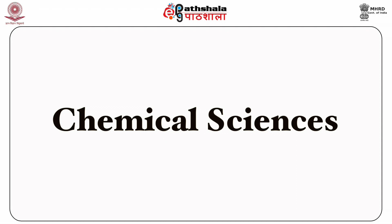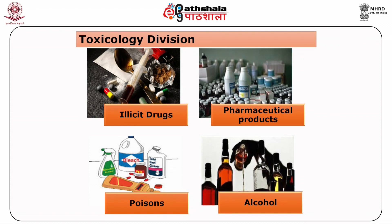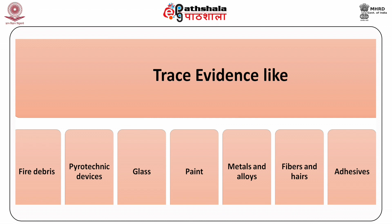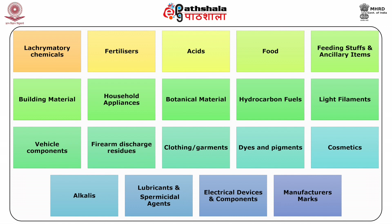In chemical sciences, controlled substances — for example, controlled pharmaceutical and illicit drugs and related chemicals or paraphernalia — are brought in. In the toxicology division, evidences sent for examination are pharmaceutical products, poisons, alcohol and human viscera. Whereas in criminalistics, trace evidences include fire debris, pyrotechnic devices, glass, paint, metals and alloys, fibres and hairs.